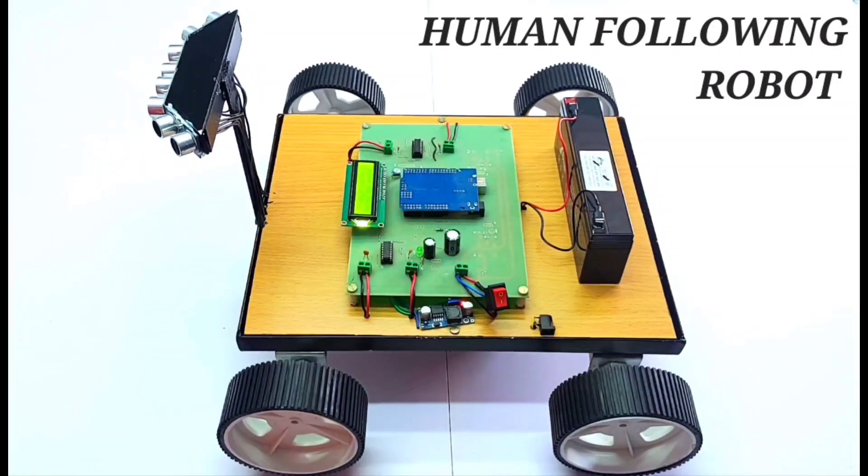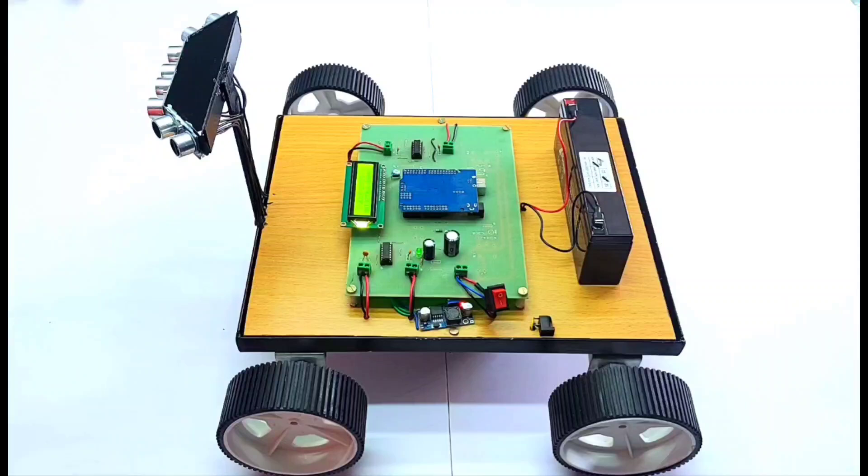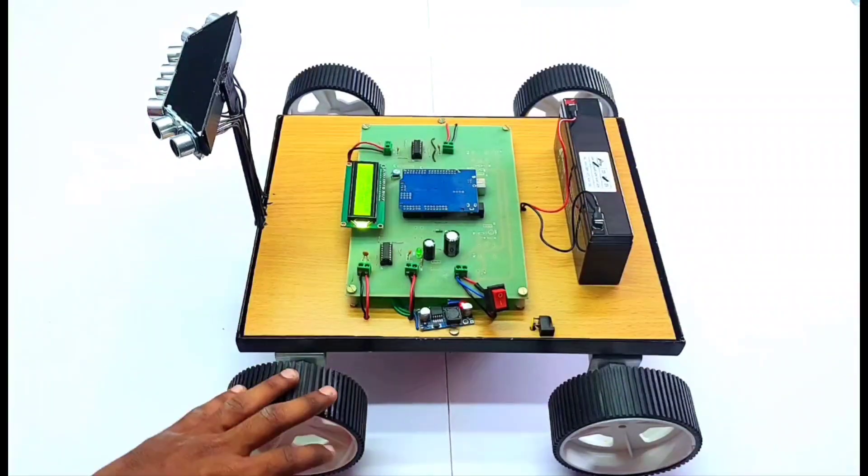Hello everyone, we are from Creativity Thing. This is our new project, a human following robot. In this project we are using ultrasonic sensors, and this is the chassis of the robot. Here is a 60 RPM gear motor.